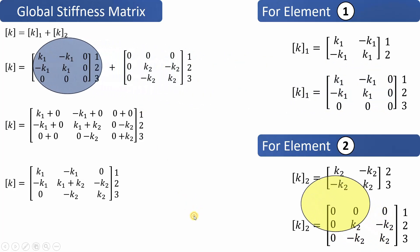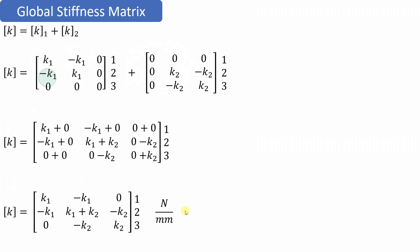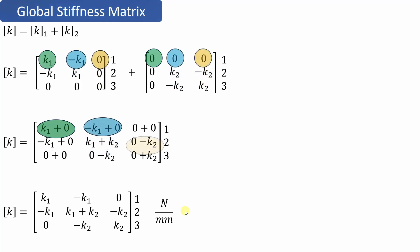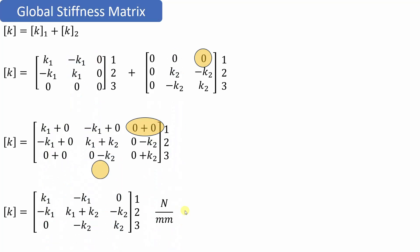The global stiffness matrix is obtained by adding the corresponding elements of the matrices K1 and K2. Adding element by element: k1+0, -k1+0, 0+0 for the first row; -k1+0, k1+k2, -k2 for the second row; 0, -k2, k2 for the third row. So the global stiffness matrix is [k1, -k1, 0; -k1, k1+k2, -k2; 0, -k2, k2] for nodes 1, 2, and 3.